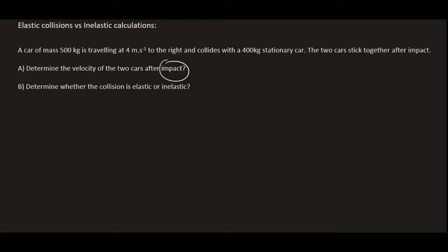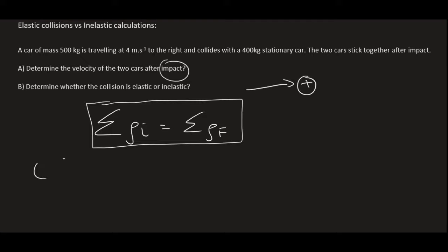Determine the velocity of the two cars after impact. Here we've got two objects colliding, so we can use our formula: the sum of the initial momentum is equal to the sum of the final. Please keep in mind that this formula does not get given to you in the exams. You just need to remember this one. Now we're going to choose the direction as positive, and then we open up our system of brackets like this.